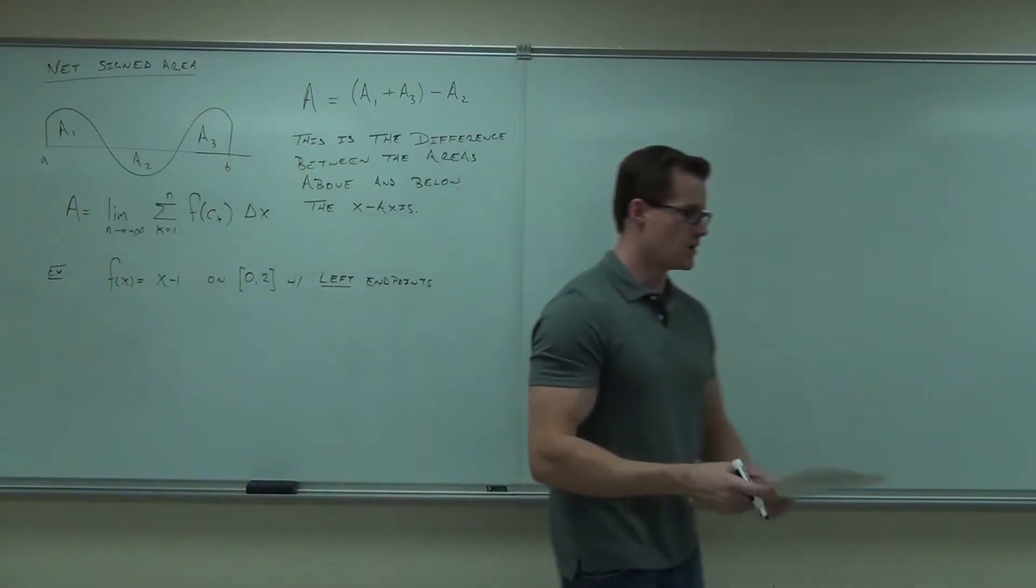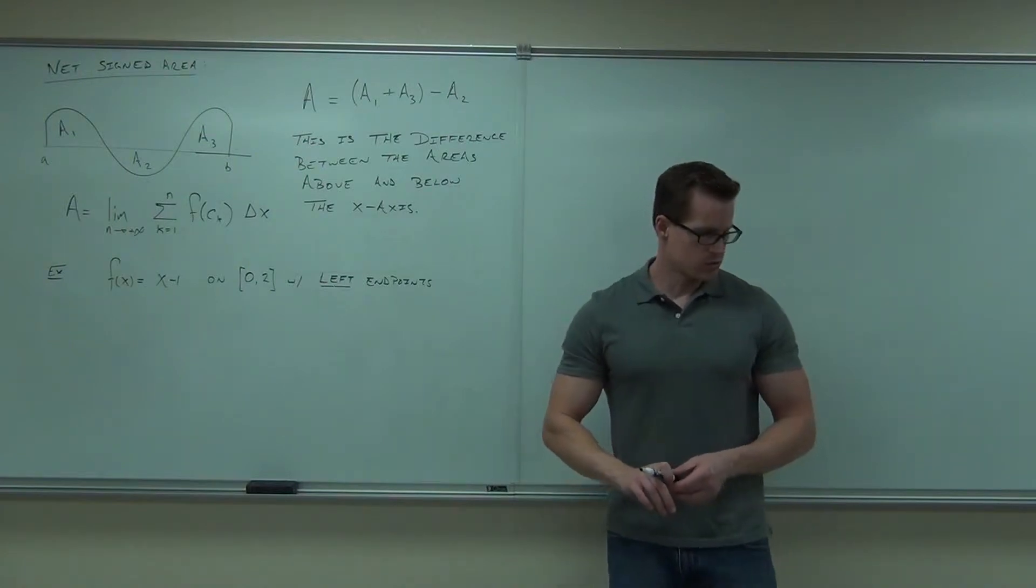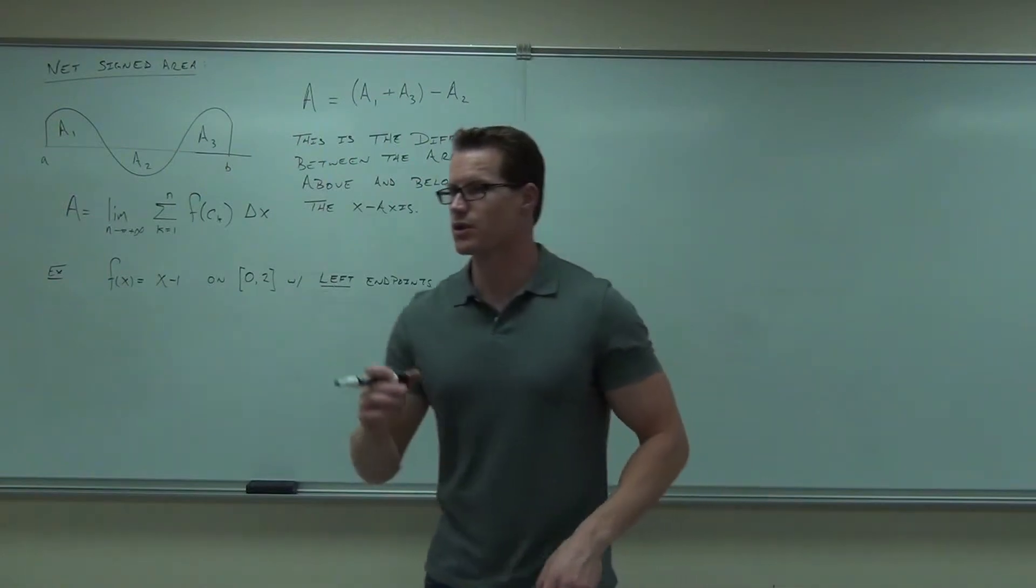We're going to find the area of f(x), under f(x), equals x minus 1 on the interval 0 to 2 with left endpoints. That's what we're going to do.